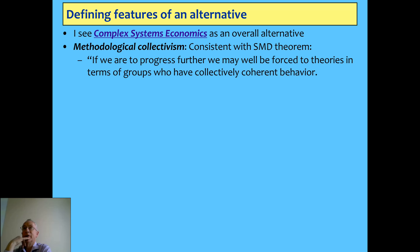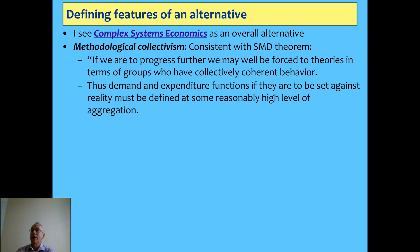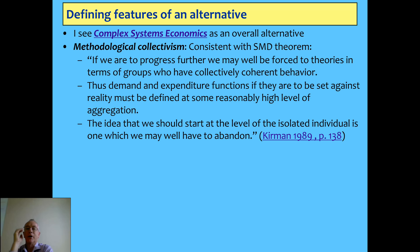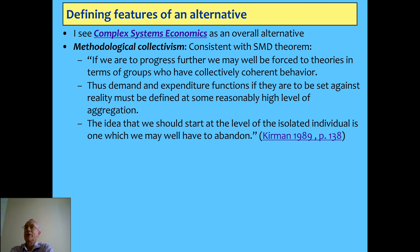Alan Kirman may be the only sensible reaction I've seen in the neoclassical literature to that theorem. He said this is telling us that if we want to progress further, we have to start with the idea of groups that have collectively coherent behavior — some reasonable level of aggregation from which we start modeling, for example workers, capitalists, and bankers. The idea that we can start at the isolated individual is one we will now have to abandon — that was Kirman back in 1989.